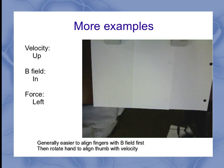Remember, the person is bringing their hand in, aligning the fingers with the B field first, and then rotating the hand to align the thumb with the velocity.